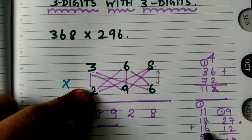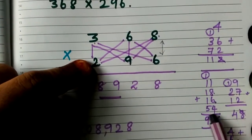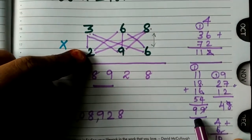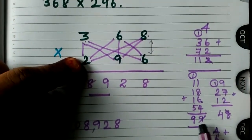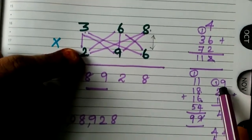2 times 8 is 16. 6 times 9 is 54. The same way you have to add it. If you add, you will get the answer 99. Instead of 99, take this 9 and write it here. 9 will be the remaining.